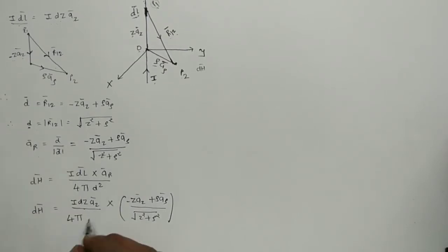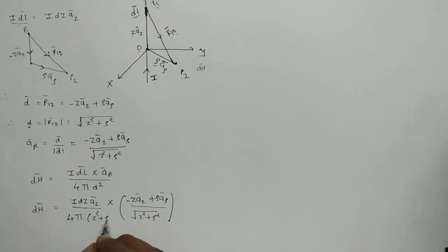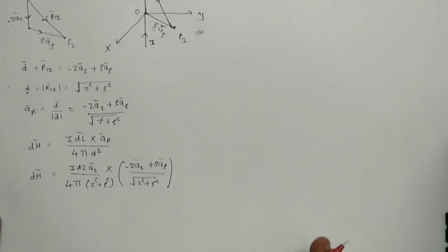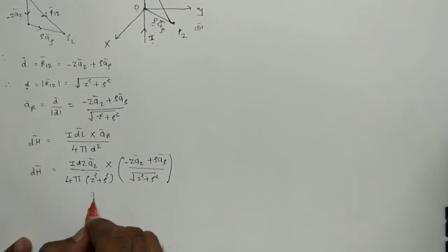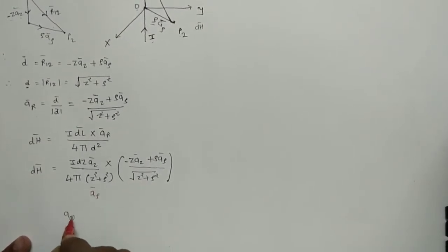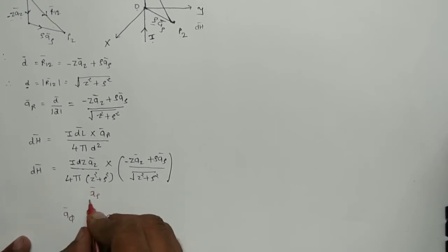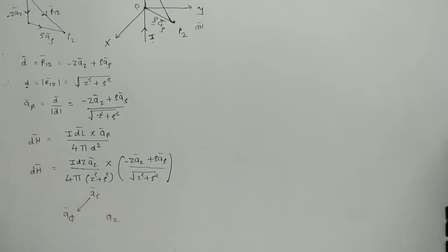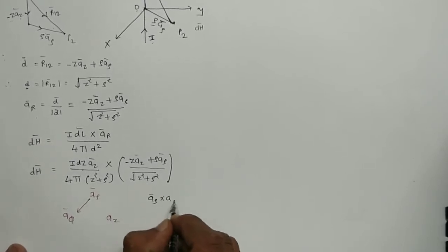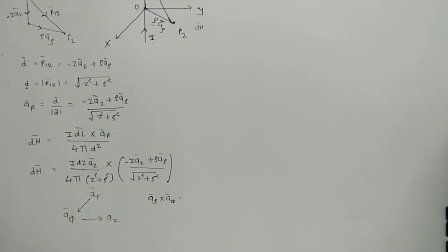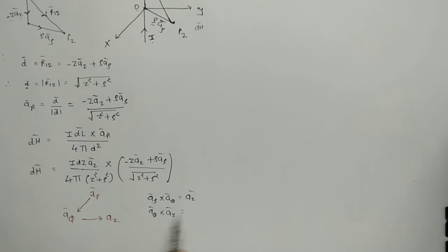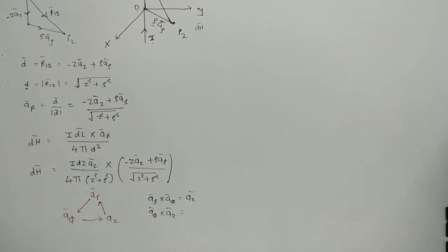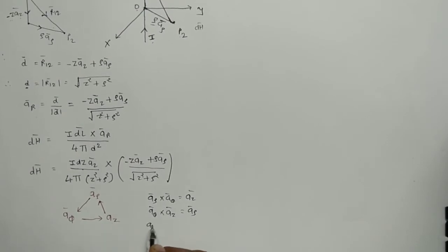After cancellation, I now work out the cross product. In cylindrical coordinates: Âρ × Âφ = ÂZ, Âφ × ÂZ = Âρ, and ÂZ × Âρ = Âφ.